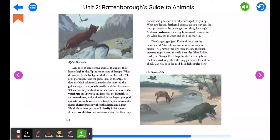The Ganges delta of India on the continent of Asia is home to swamps, forests, and creeks. The animals that live there include the black-crowned night heron, the wild boar, the olive ridley turtle, the Ganges river dolphin, the Indian python, the blue-eared kingfisher, the mugger crocodile, and the chital. Can you spot the cold-blooded reptiles here?